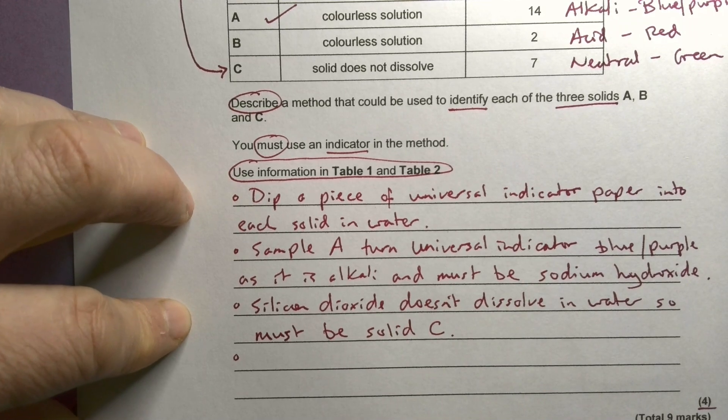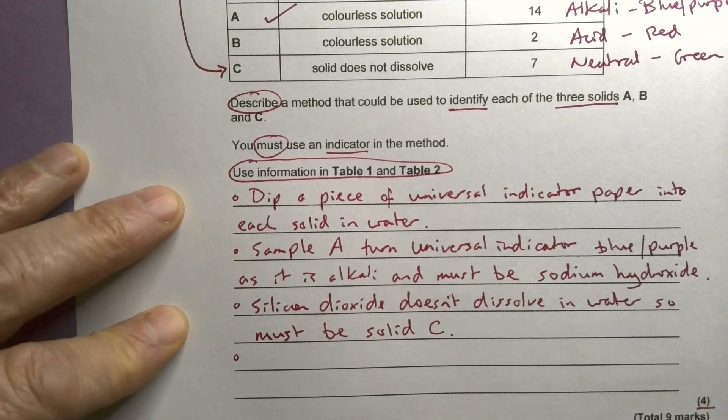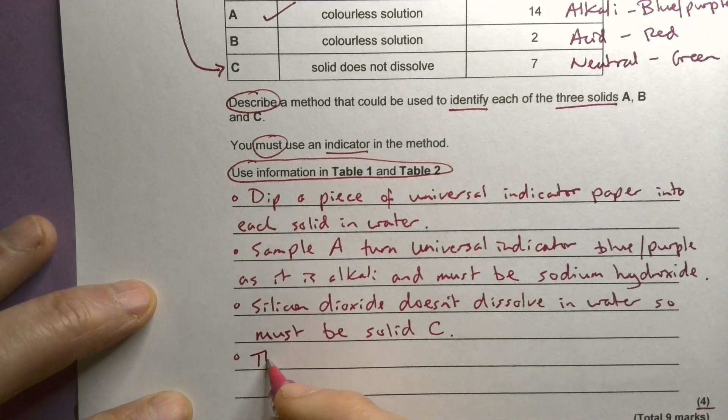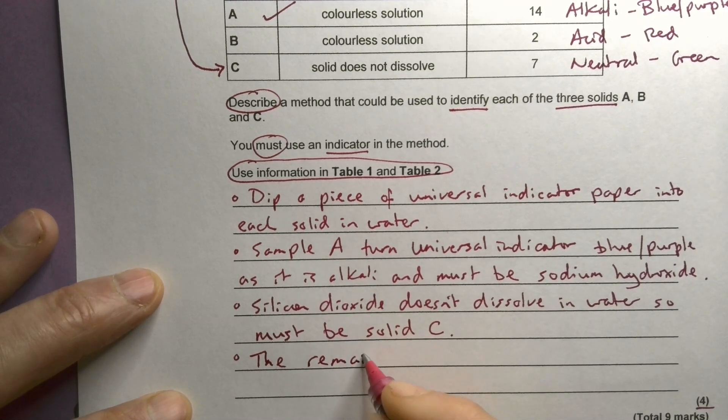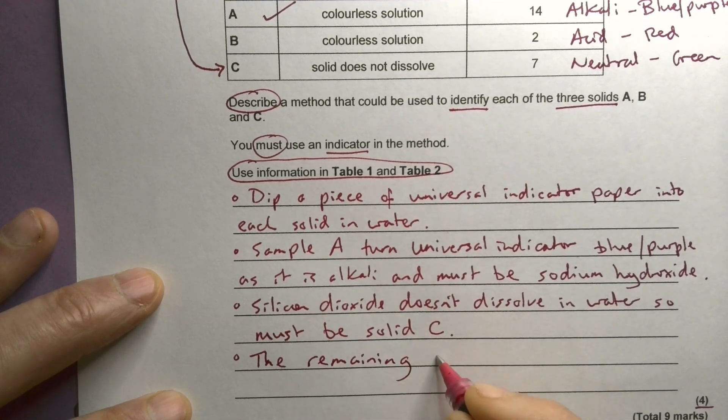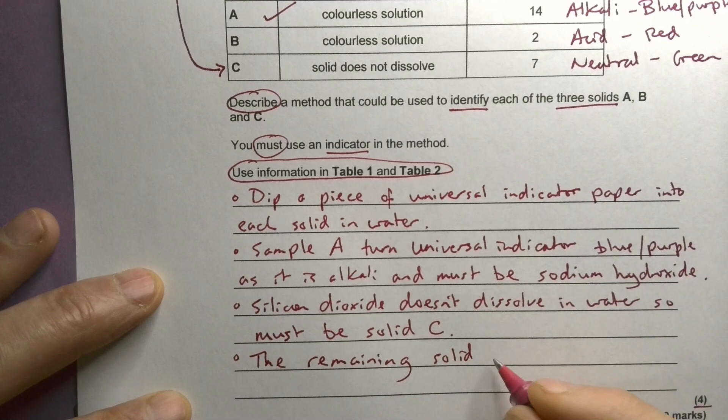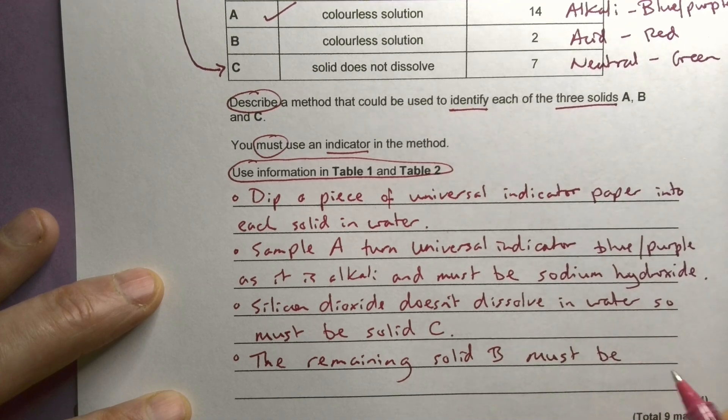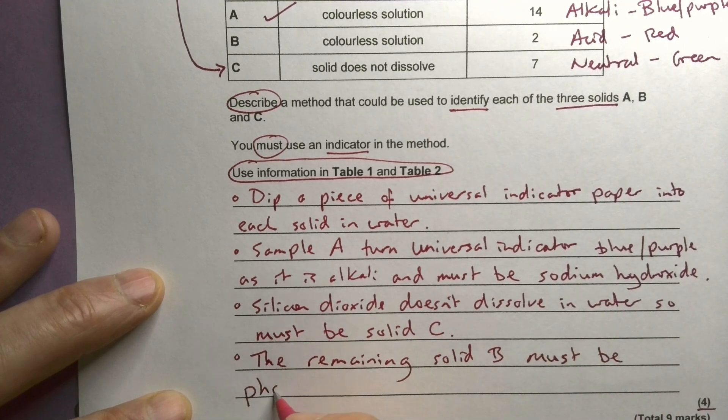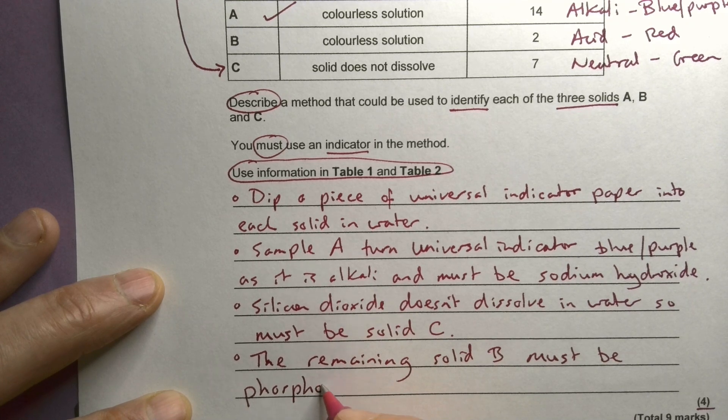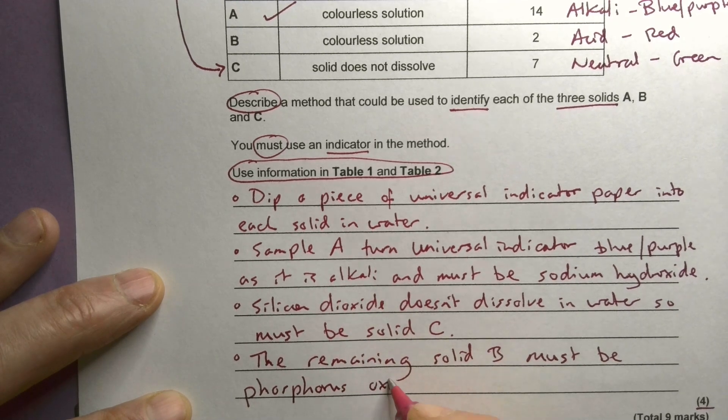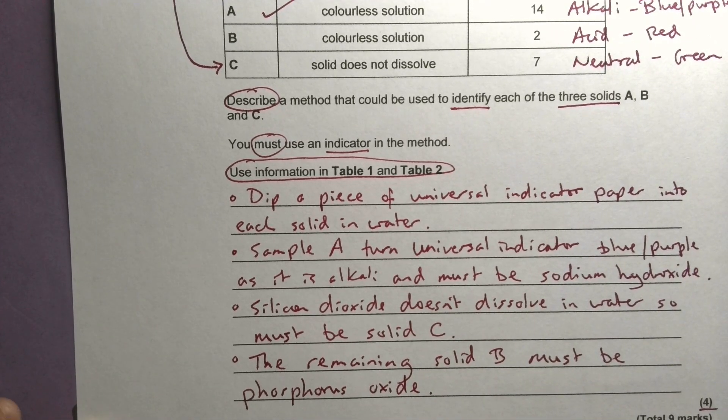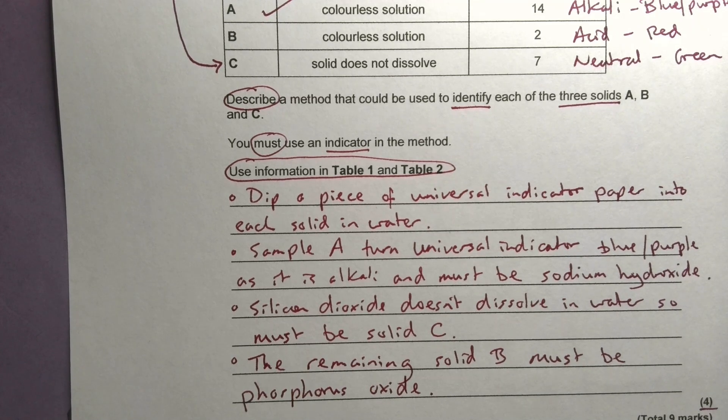Which means that phosphorus oxide must be the remaining solid, which one's left, B. So B must be phosphorous oxide. Okay, so by process of elimination, I've worked out that B must be phosphorous oxide.